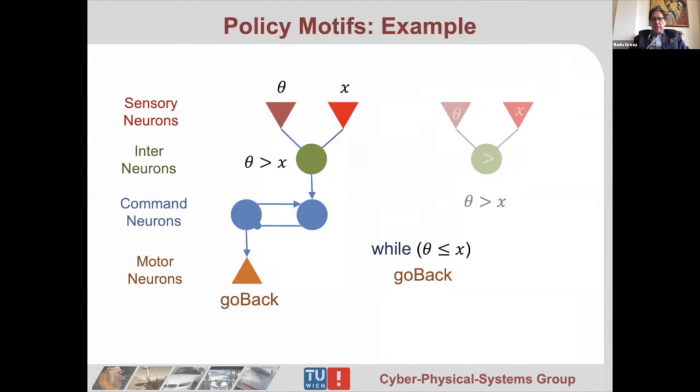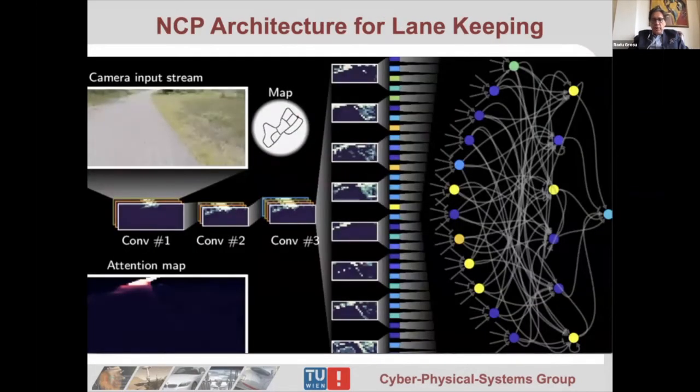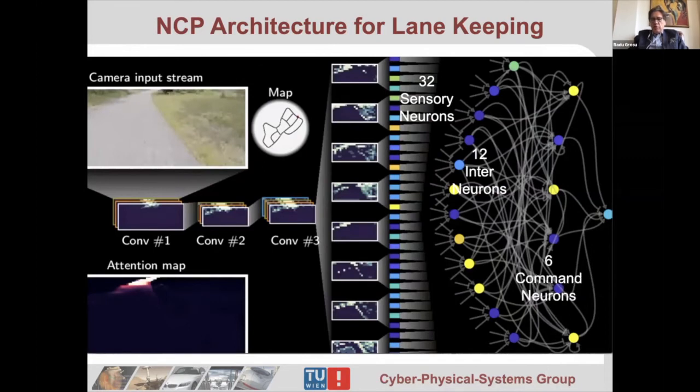Using these primitives, you can do design. For example, you can implement a lane keeping controller where you have a camera input stream and a set of four levels of convolutions to extract features from the camera stream. This serves as our sensory neurons—the 32 features that we get from the convolutional layers. These sensory neurons are connected to 12 interneurons, so these interneurons process the sensory information appropriately for the command neurons, the six command neurons, and the command neurons then steer the motor neuron.